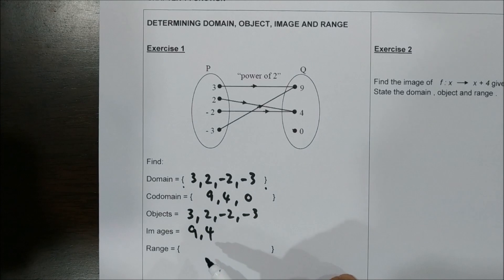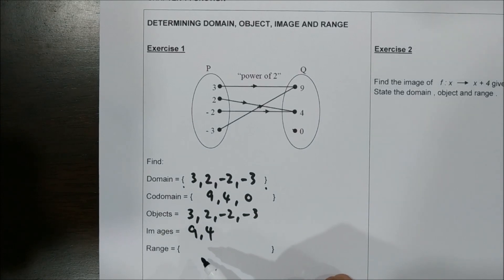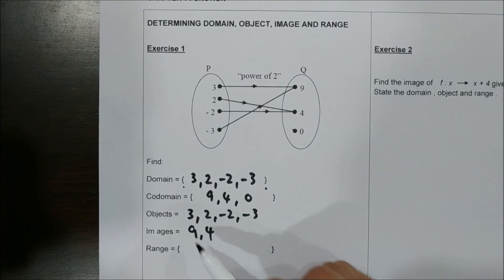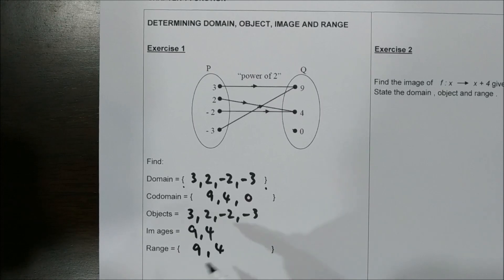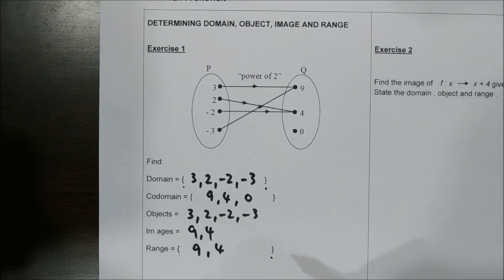Lastly, for the range — range is the set of all the images. So the range is 9, 4. Again, range is a set, that's why we need to write this in set notation.